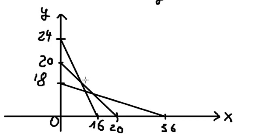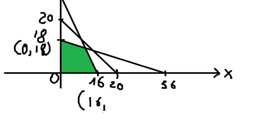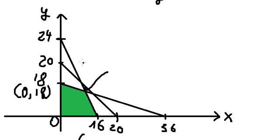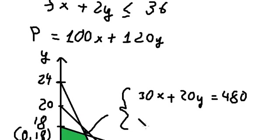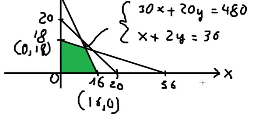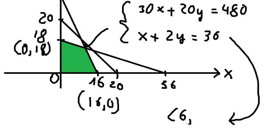The feasible region is the shaded area. The corner points are (0, 18) and (16, 0). To find the intersection point, we solve the system: 30x plus 20y equals 480 and x plus 2y equals 36.